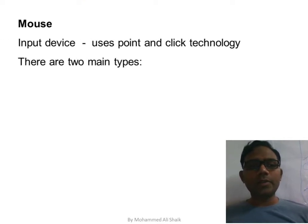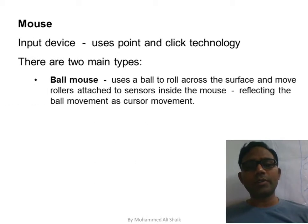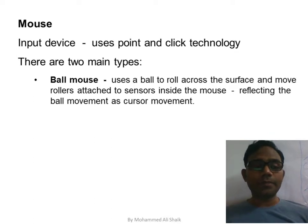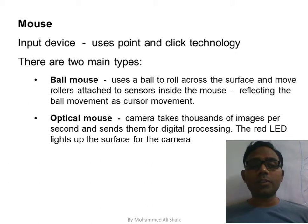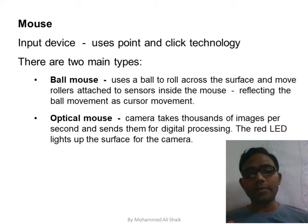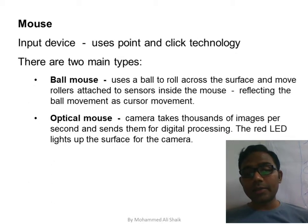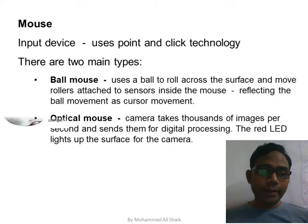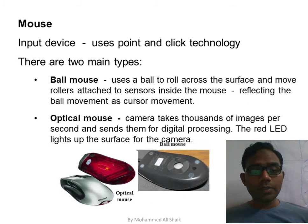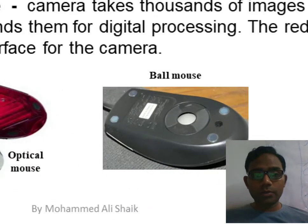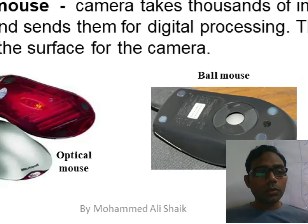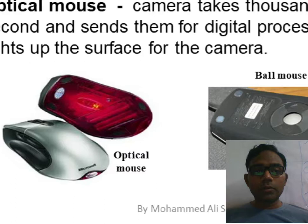The mouse is an input device used for about 90% of graphical input. There are mainly two types: the ball mouse (now obsolete, having a ball instead of a sensor) and the optical mouse (present day), which has a camera that takes thousands of images per second and uses an LED sensor for digital tracking.